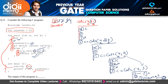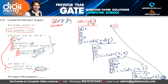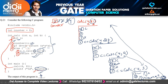They are only asking for the value of counter, not the return value of the recursive function. After four function calls, the maximum value the counter reaches is 4. So the output of this program is 4.